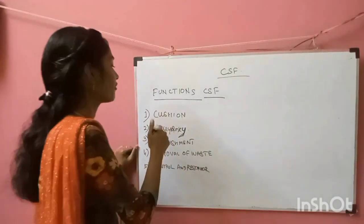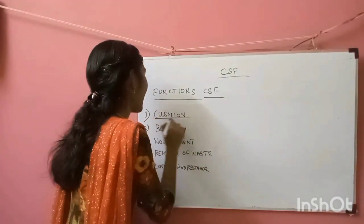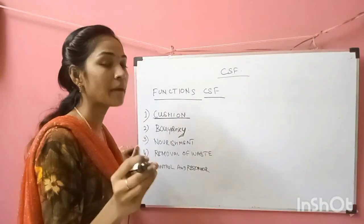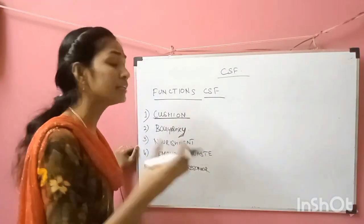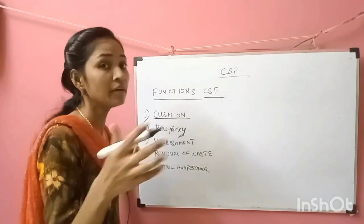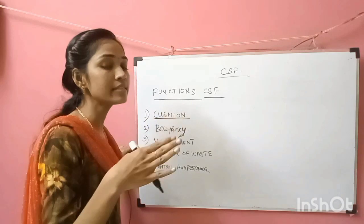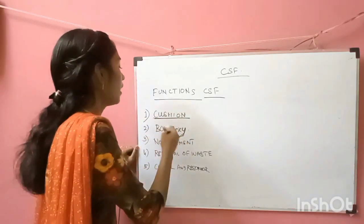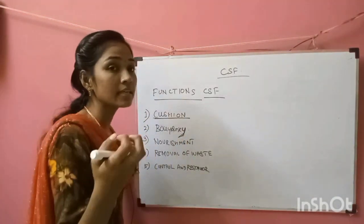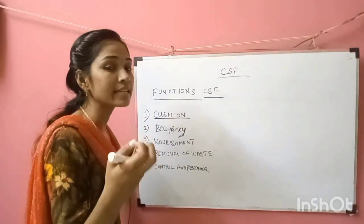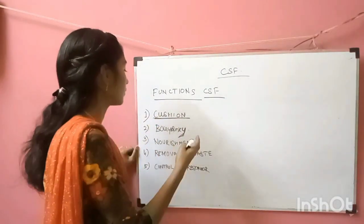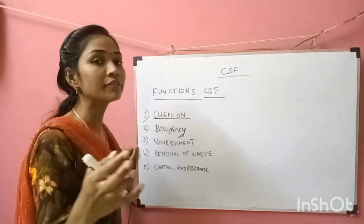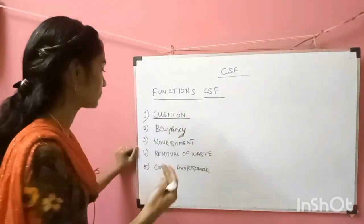First is the cushion function. The CSF acts as a cushion to the central nervous system. In day-to-day life there is some movement of the central nervous system, so the CSF acts as a cushion and protects the central nervous system from damage.